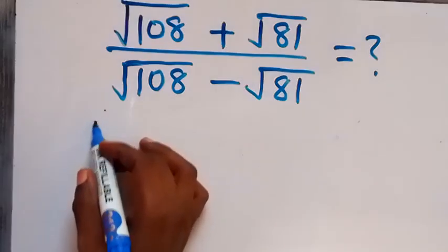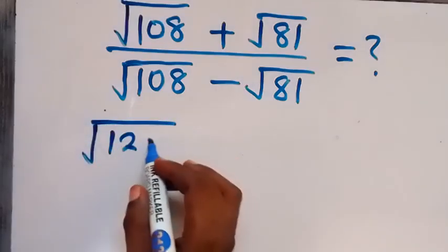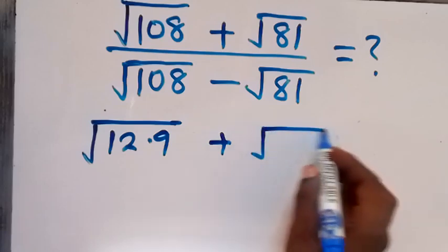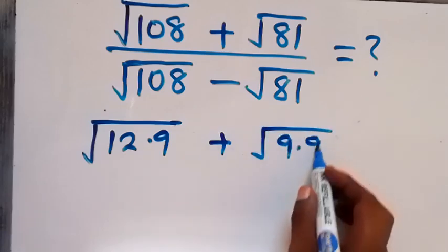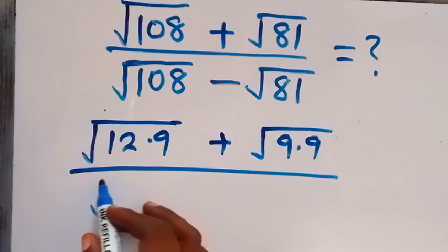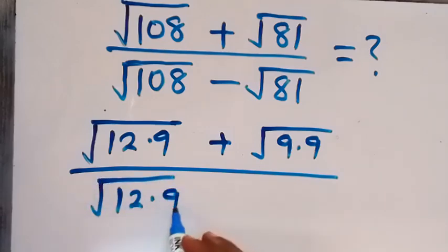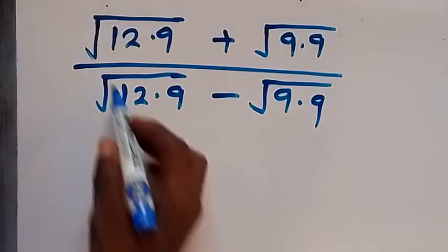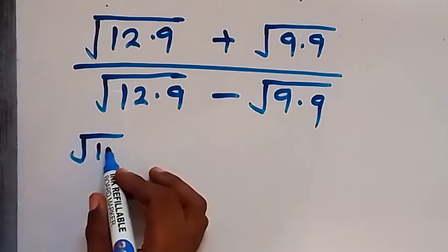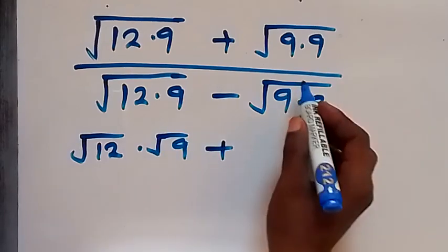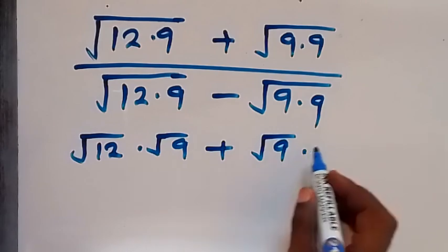Let's write 128 as 12 times 9, and square root of 81 as 9 times 9, then divided by square root of 12 times 9. Then minus square root of 9 times 9. In the next step we can separate this as square root of 12 times square root of 9, then plus square root of 9 times square root of 9.